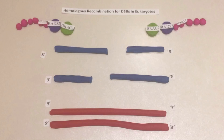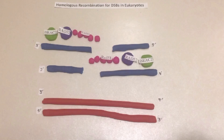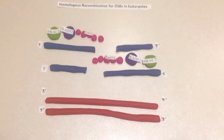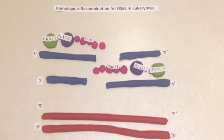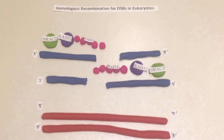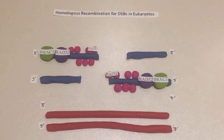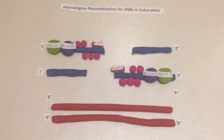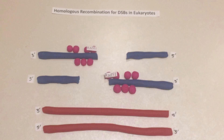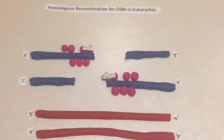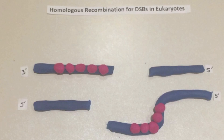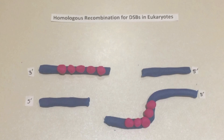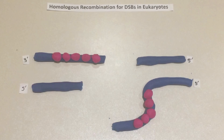RAD51 binds to single-stranded DNA with the help of BRCA2 and RAD52. BRCA2 and RAD52 cooperate to load RAD51 onto ssDNA coated with RPA to form the essential recombination intermediate. The nucleoprotein filament begins searching for DNA sequences similar to that of the three prime overhang.